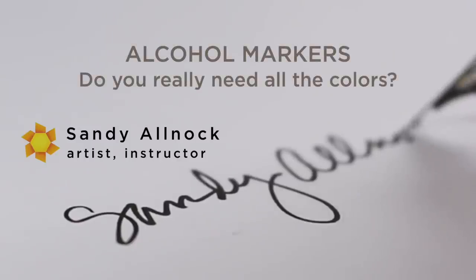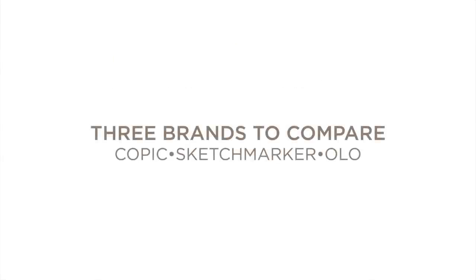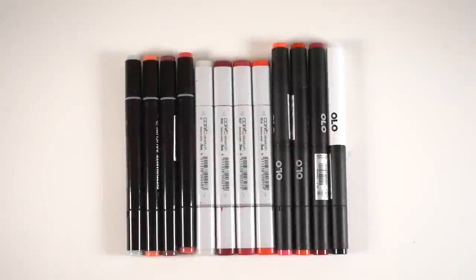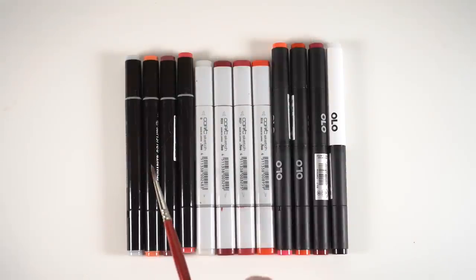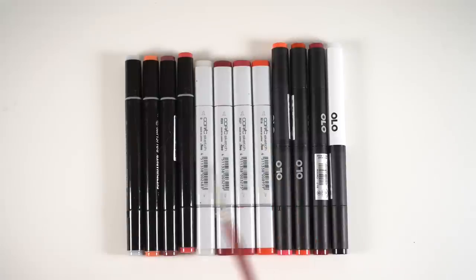Copic is by far the oldest brand of these three. It's been around for decades and decades, and they haven't made any major changes — they haven't added any colors in a long time. They did reformulate the body of the refill bottles a while back. Sketchmarker has 448 colors, Copic 358, and Olo 128. I fully suspect that Sketchmarker and Olo will add more colors in time — they're just newer and hungrier companies.